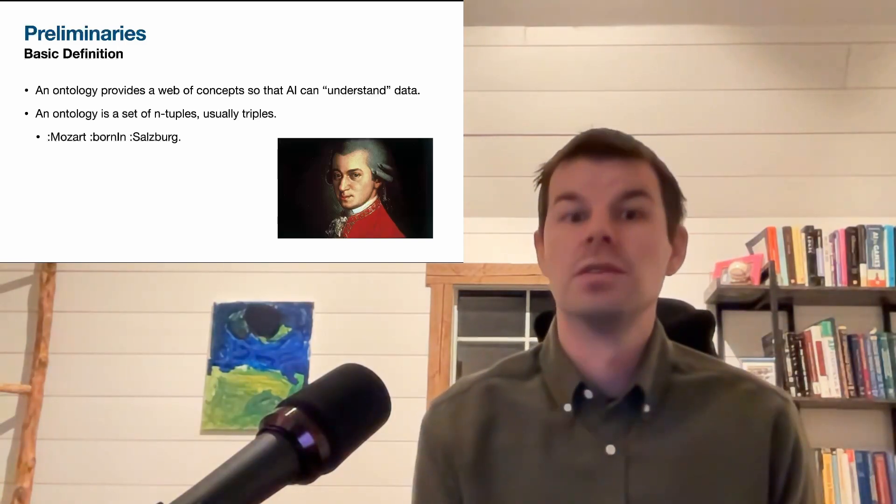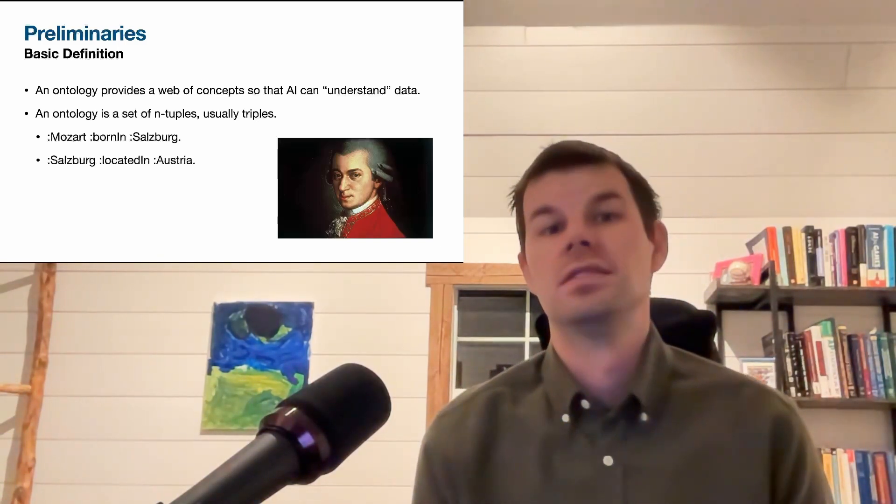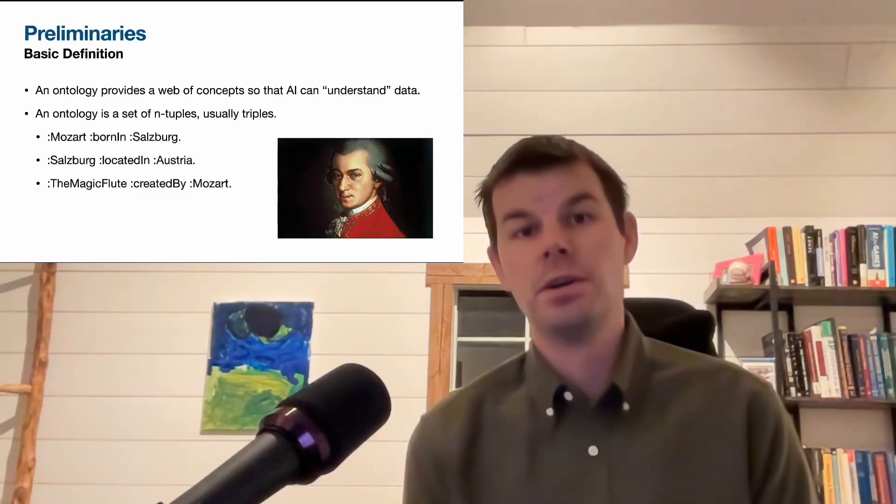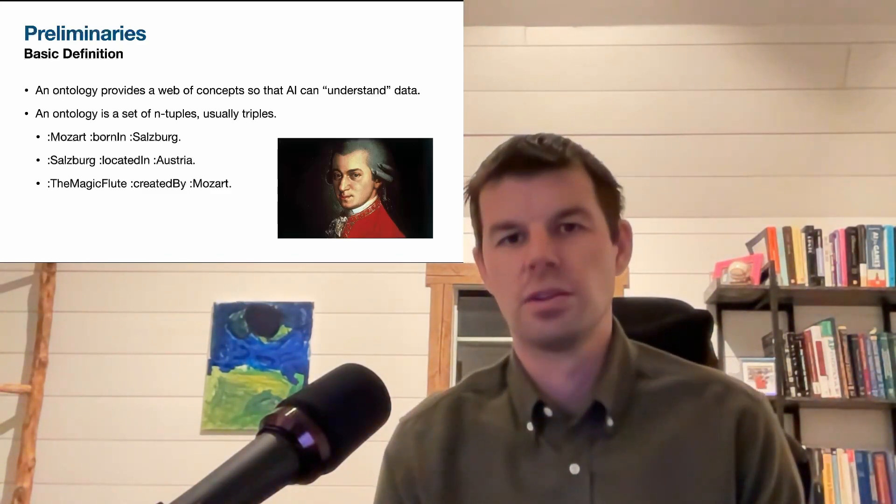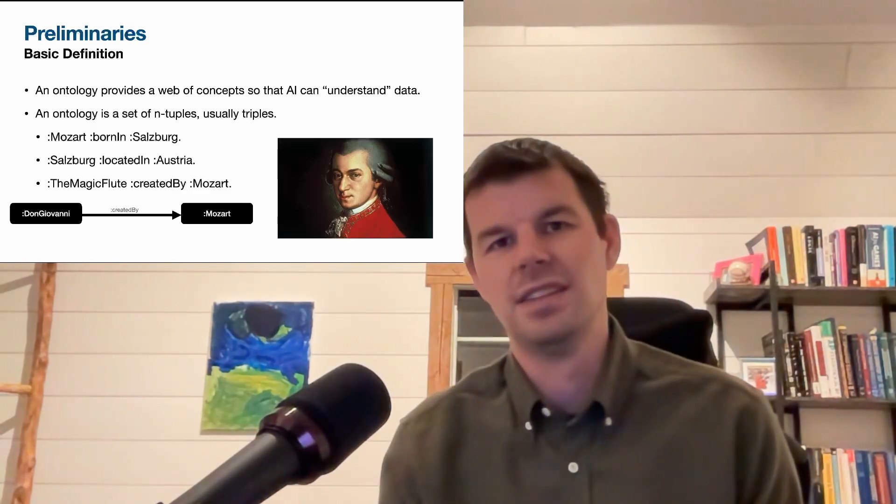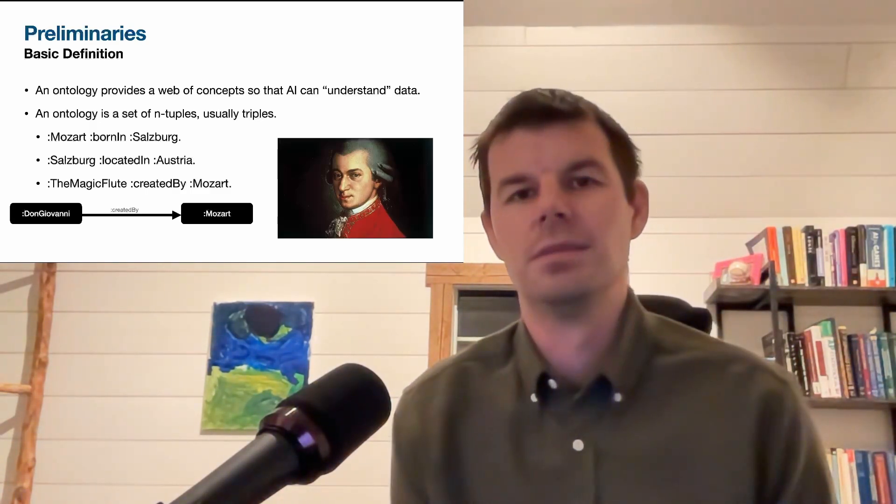What does that mean? Things like this: Mozart was born in Salzburg, Salzburg is located in Austria, and the Magic Flute was created by Mozart. When we talk later about these triples being in a graph, you might represent them this way, where we've got a couple of nodes connected by an edge to say that Don Giovanni was created by Mozart.